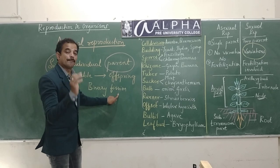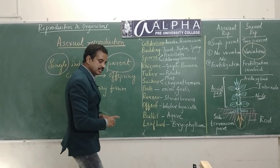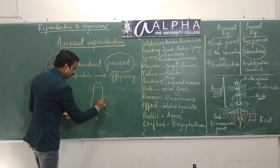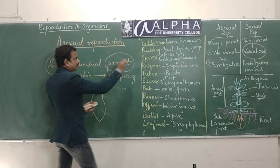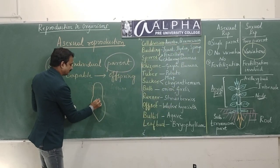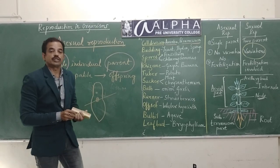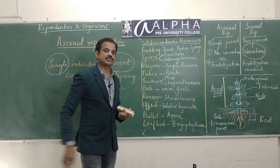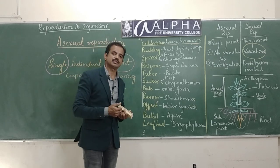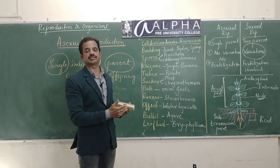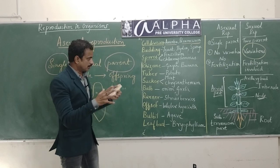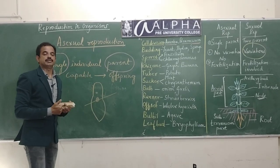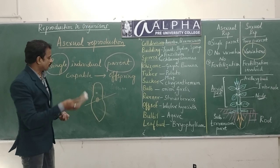Amoeba reproduces asexually by binary fission. In the very same way, Paramecium - also a protozoan like Amoeba - will also divide transversely to give rise to two daughter cells. This is also binary fission. So these two examples given in your textbook, under lower animals, explain asexual reproduction by binary fission.